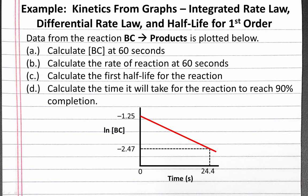In this example problem, we'll use our straight-line graph of concentration and time for a first-order reaction to determine our integrated rate law, differential rate law, and half-life. Our problem reads: data from the reaction BC produces products is plotted below. For Part A, calculate the concentration of BC at 60 seconds. For Part B, calculate the rate of reaction at 60 seconds. For Part C, calculate the first half-life for the reaction. And for Part D, calculate the time it will take for the reaction to reach 90% completion.